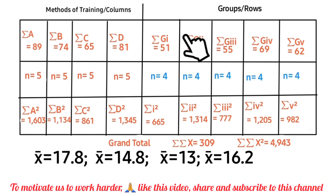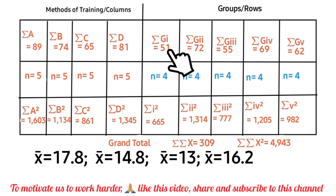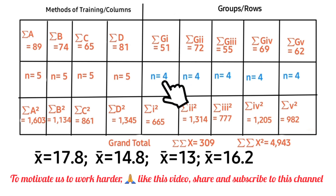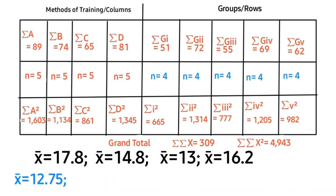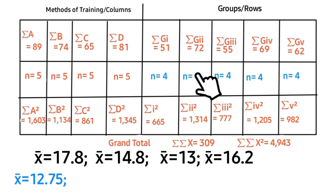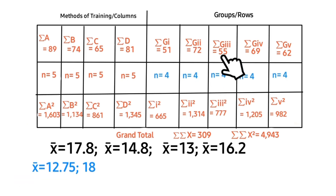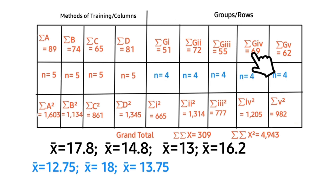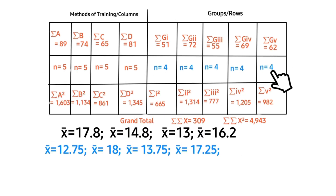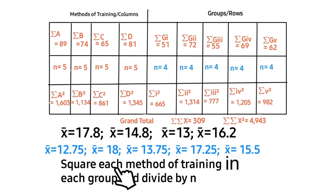Let's also get the means for each group. For the first group, the mean is 51 divided by 4, giving that value. The mean for the second group is 72 divided by 4. For the third group, divide that value by 4. For group four, divide that value by 4. For the last group, divide that value by 4.